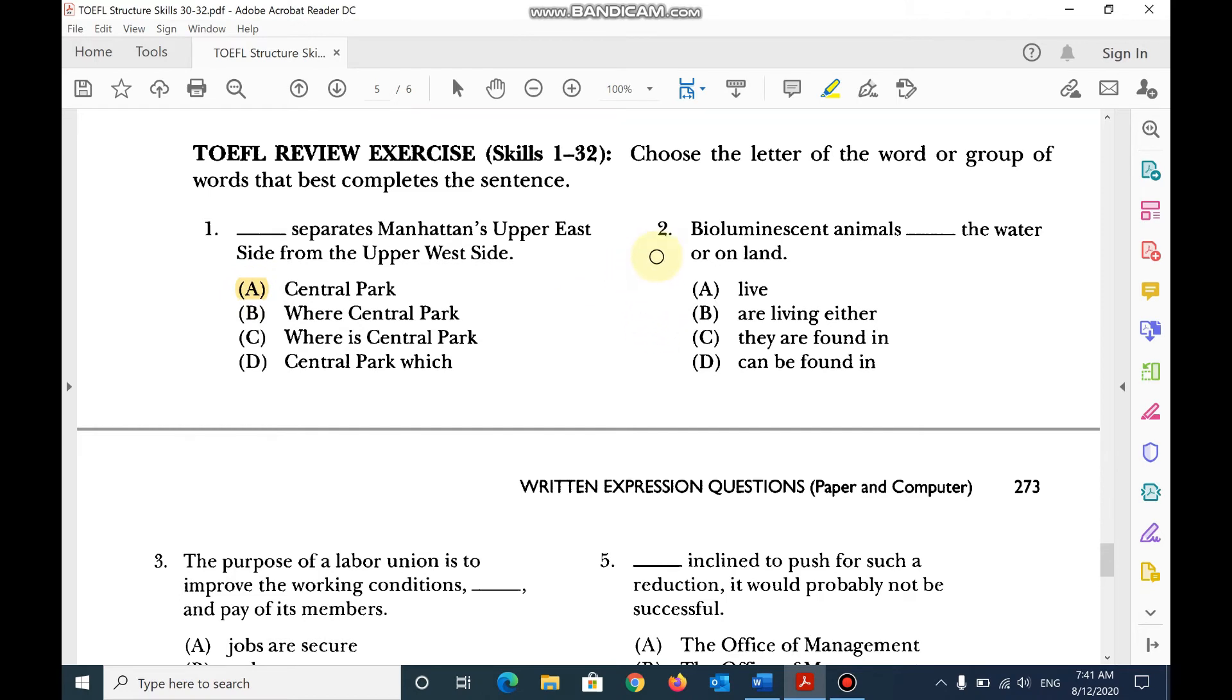Number 2, bioluminescent animals, this is the subject, the water or on land, or, either or. Number 4, if you use are living, it is temporary, this is something that is permanent, so D is better, can be found in the water or on land.